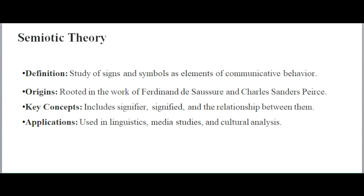Semiotic theory, developed by Ferdinand de Saussure and Charles Sanders Peirce, focuses on how signs and symbols create meaning. In this theory, a sign consists of a signifier — the form of the sign — and a signified — the concept it represents. For example, in Assam, consider a traditional gamosa. The gamosa itself, the signifier, is a piece of cloth, but it signifies respect, Assamese identity, and cultural pride. When someone presents a gamosa to a guest, it communicates respect and honor without words.